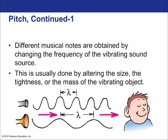Different musical notes are obtained by changing the frequency of the vibrating sound source. This is usually done by altering the size, the tightness, or the mass of the vibrating object. A sound with a longer wavelength would result in a lower frequency — as lambda goes up, the wavelength goes up, the frequency goes down, which means the pitch is lower.